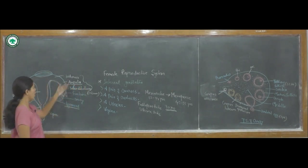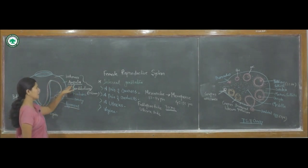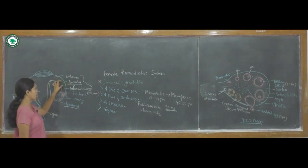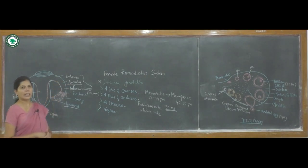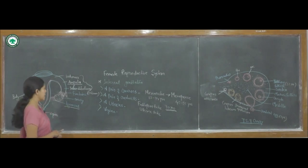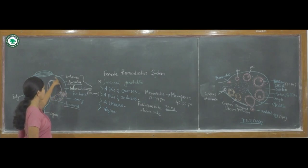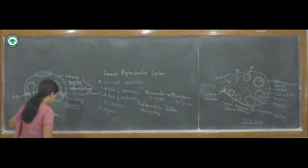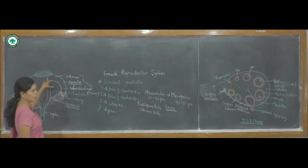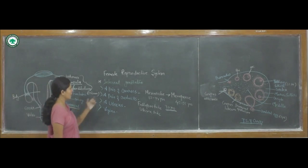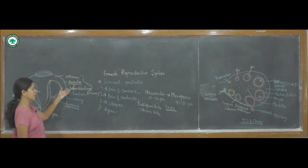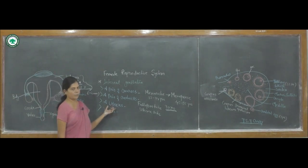The ampulla is the second region of the oviduct. The function of the ampulla is that fertilization of the ovum or egg is carried out in the ampulla region. The third part of the oviduct is the isthmus, which is narrow in nature and opens into the uterus. So the pair of oviducts has three parts: isthmus, ampulla, and infundibulum.